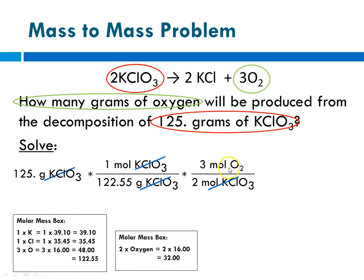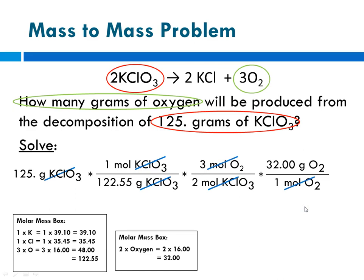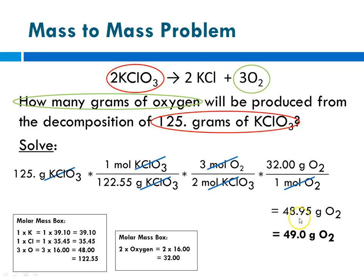Now we're at moles of oxygen, so we need to multiply by molar mass to get to grams. Grams goes in the numerator since that's what we want, and moles goes in the denominator so that moles of oxygen cancels out. Plugging into our calculator: 125 divided by 122.55, times 3 divided by 2, times 32 — that equals 48.95 grams of oxygen. That number has 4 significant digits, so we round to 49.0, because the 9 is followed by a 5, so we round up.